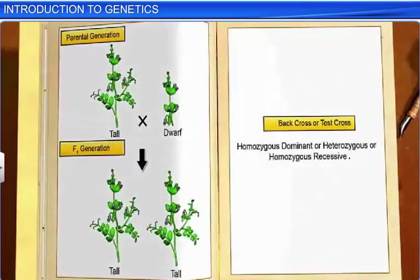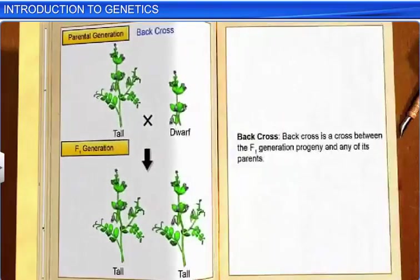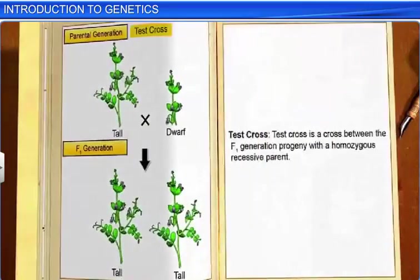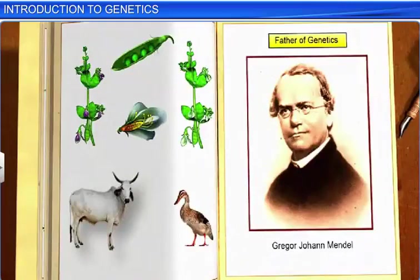To determine if an individual is homozygous dominant, heterozygous, or homozygous recessive, a back cross or a test cross is carried out. A back cross is a cross between the F1 generation progeny and any of its parents, while a test cross is a part of a back cross between F1 individuals with a homozygous recessive parent, and it is performed to determine the unknown genotype. Thus, genetics explains how traits are passed on from parents to their young ones, and the principles governing genetics were discovered by Gregor Johann Mendel, the father of genetics.